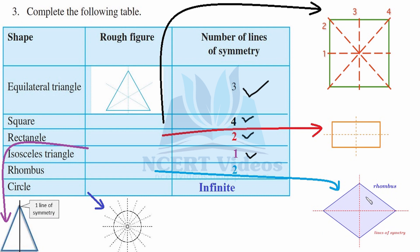A circle: when you try to count the lines of symmetry for a circle, they turn out to be infinite. That was question three.